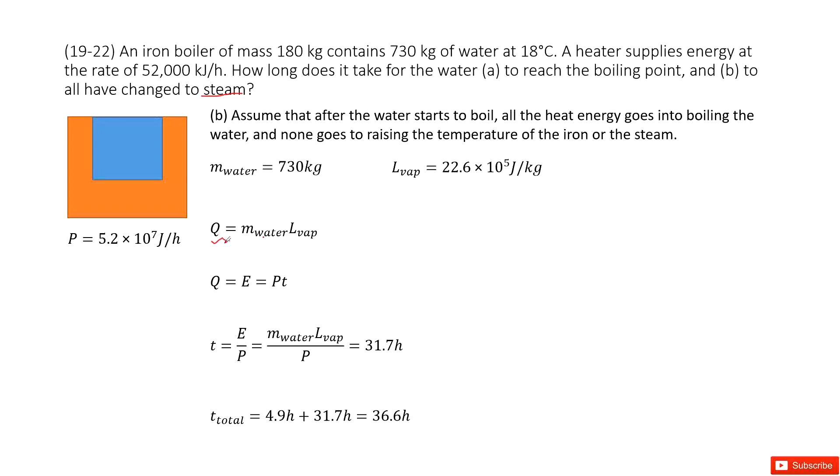This Q equals the energy for liquid transferring to gas. The heat absorbed equals the electric energy consumed: P times t. We can find the time for liquid to gas transfer. Time equals E over P, where E equals Q. This Q is the mass of water times the vaporization constant, divided by P. Input all known quantities to get the answer.